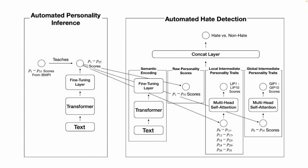For the automated personality inference method, we use a knowledge distillation approach, where we use 35 personality scores derived from a proprietary model called IBM PI as source data.